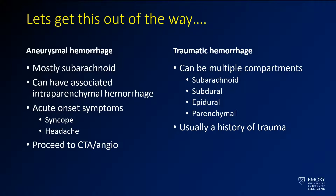Traumatic hemorrhage is similar in the sense that you often have a history of trauma — you typically know there was a car accident or a car hit a pedestrian. Traumatic hemorrhage doesn't really follow a lot of rules. It can be subarachnoid, subdural, or epidural — it can kind of be all over the place. But that's going to be the extent to which I cover these topics today.